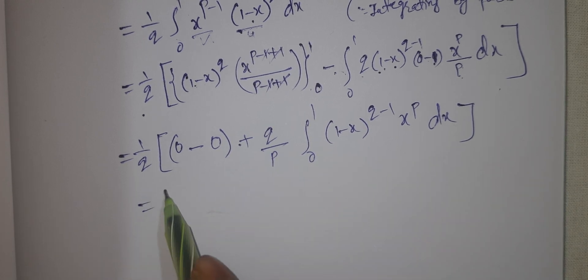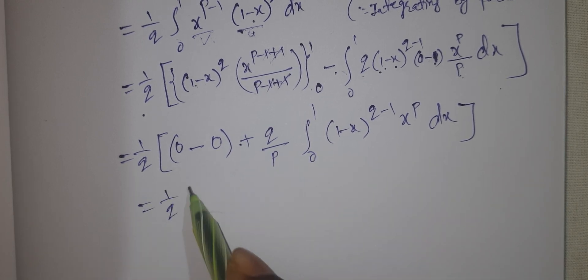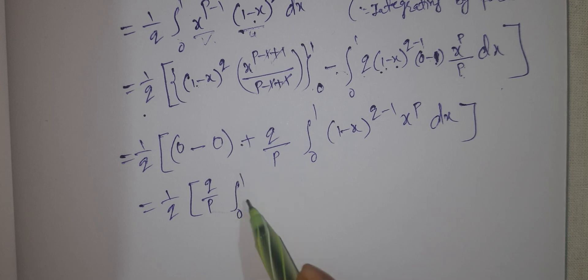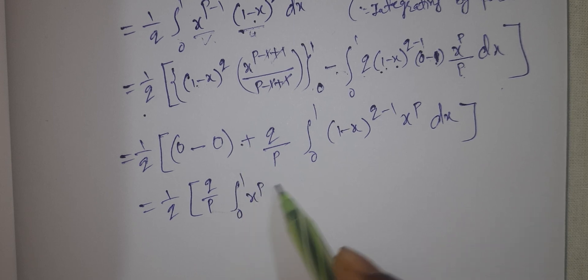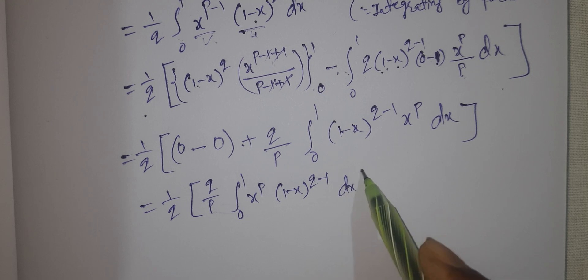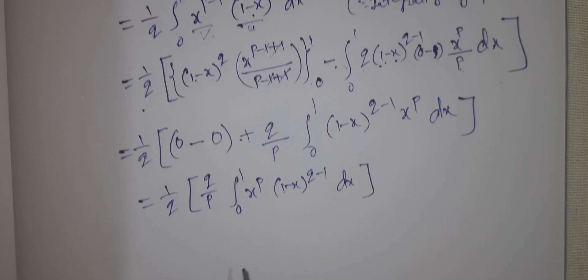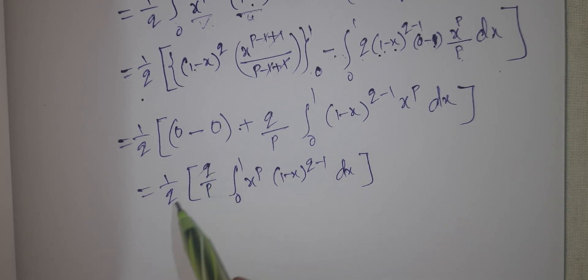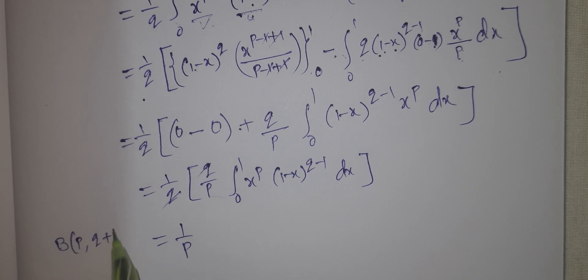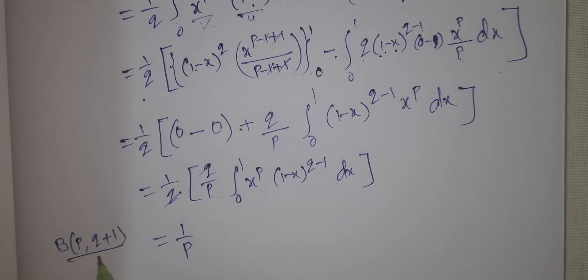Multiplying through, we get 1 by q times q by p times the integral from 0 to 1 of x to the power of p times 1 minus x to the power of q minus 1 dx. Here q and q cancel, leaving 1 by p. This equals beta of p, q plus 1 by q.